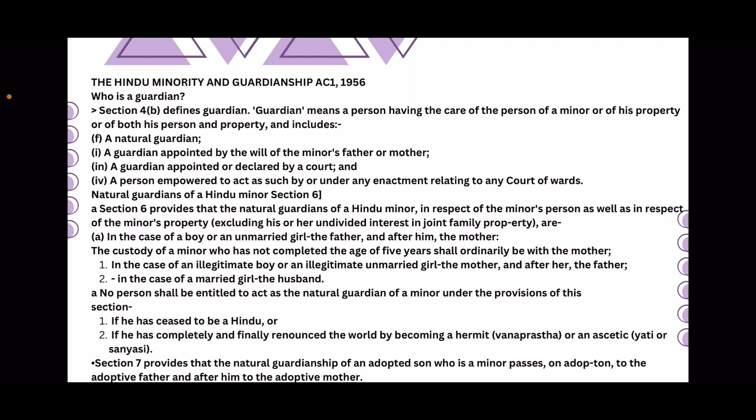In the case of a boy or an unmarried girl, the first natural guardian is the father, and after the father, the mother. The custody of a minor who has not completed the age of 5 years shall be with the mother.